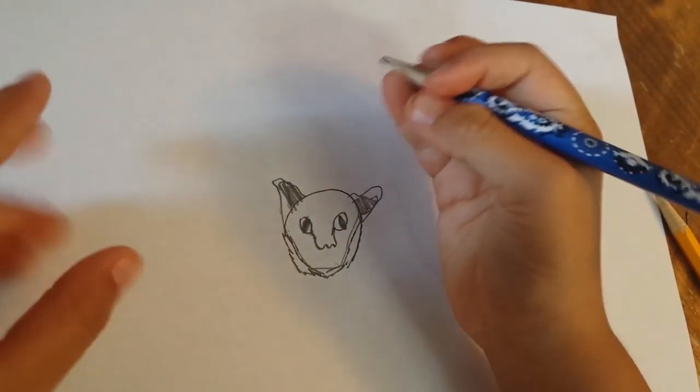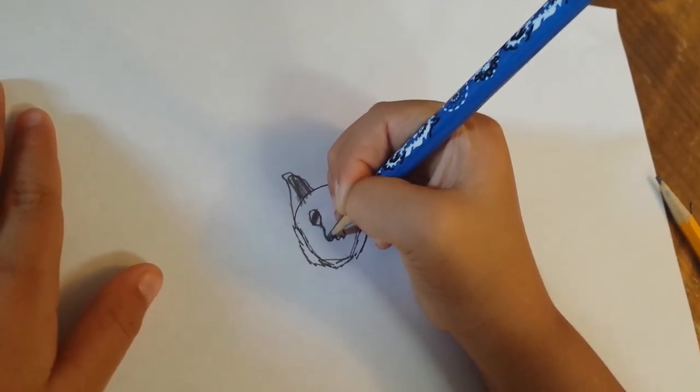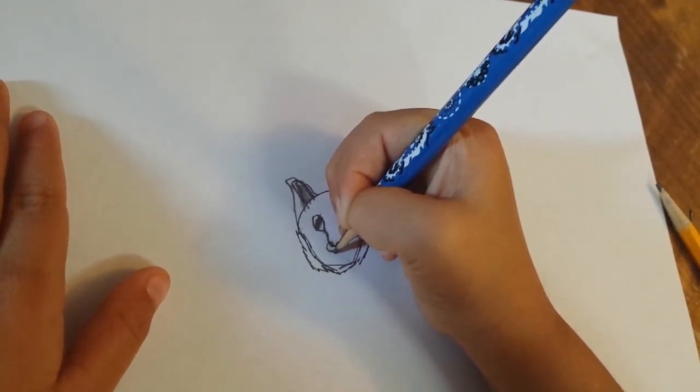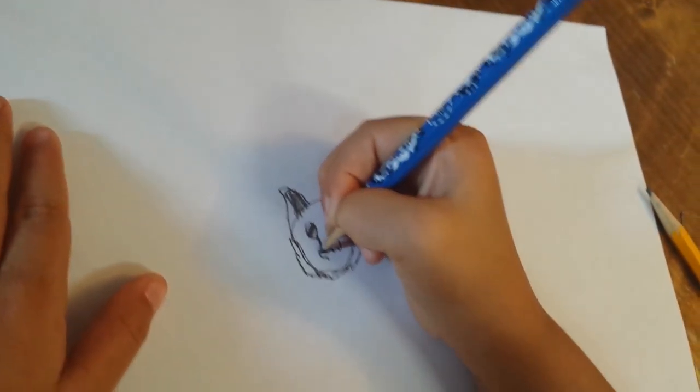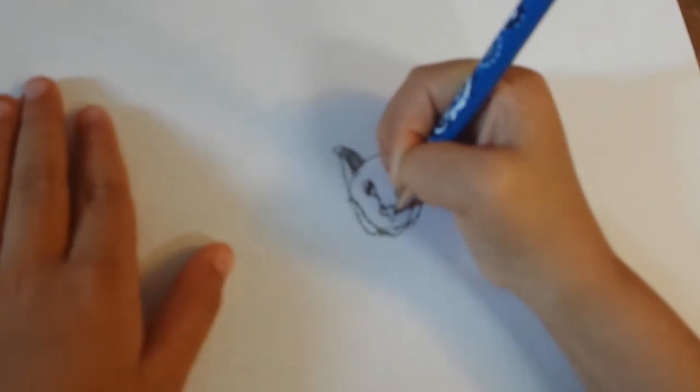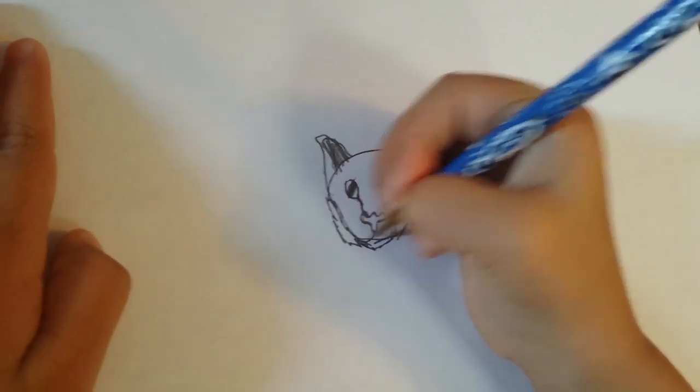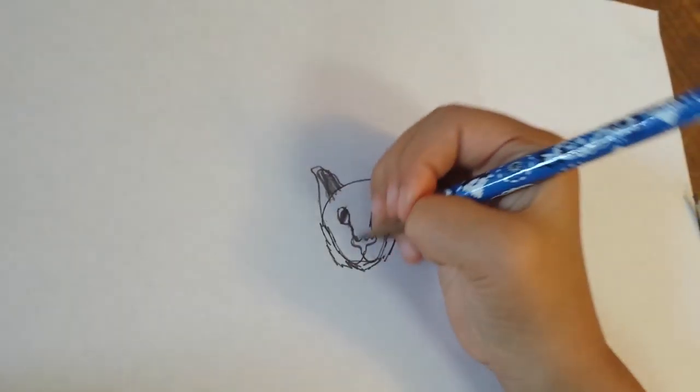Do a triangle at the bottom of the eye pointing towards down. Do up, down, up, down to do the nose line. Then you do a loop down,